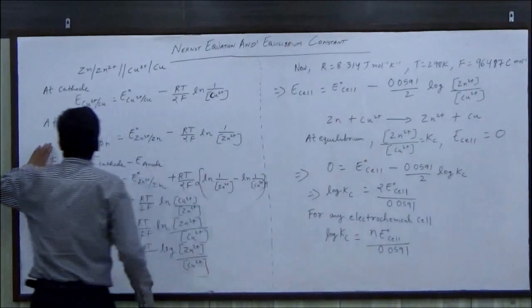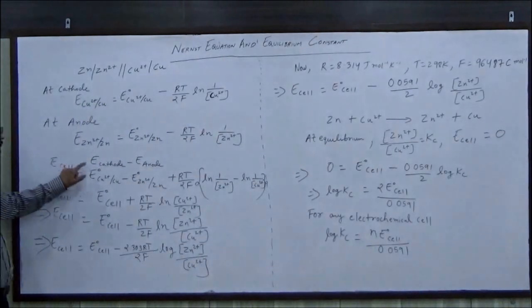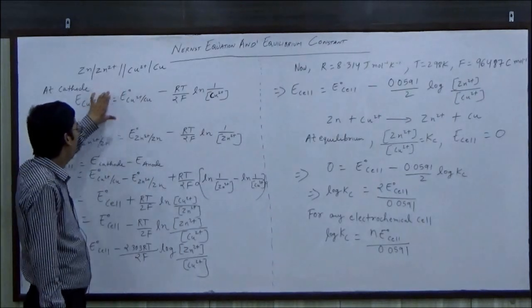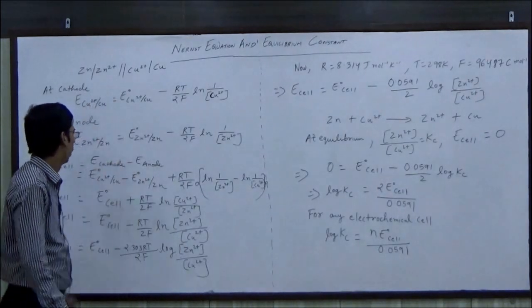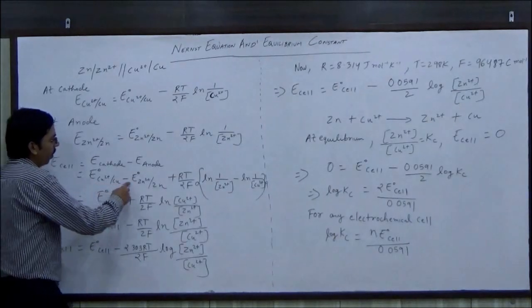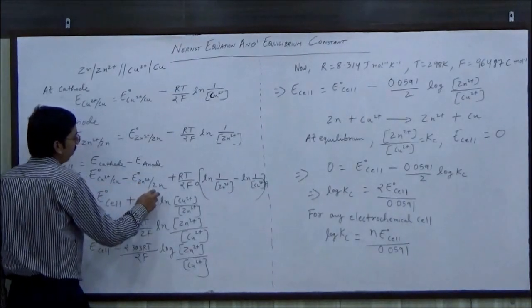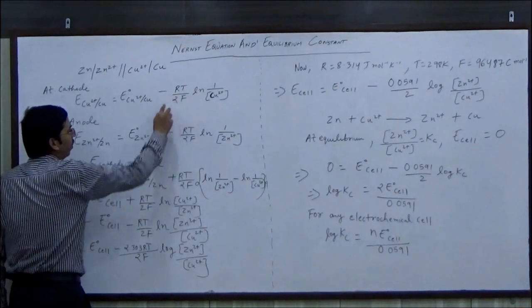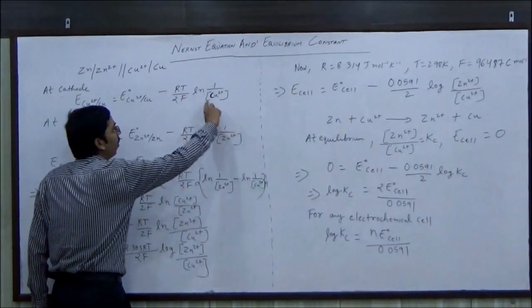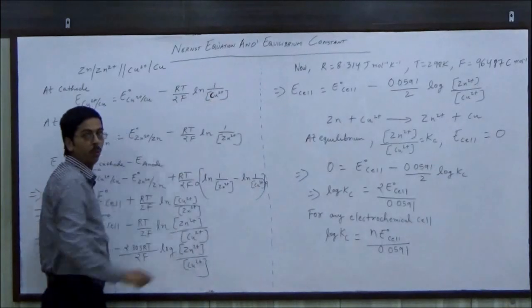Now we know that E cell is equal to E cathode minus E anode. Now we will put the expression of E cathode and the expression of E anode, which is equal to E0 Cu2+/Cu minus E0 Zn2+/Zn, minus minus to become plus RT by 2F ln 1 by Zn2+ minus ln 1 by Cu2+.